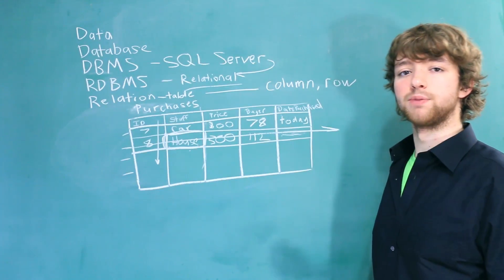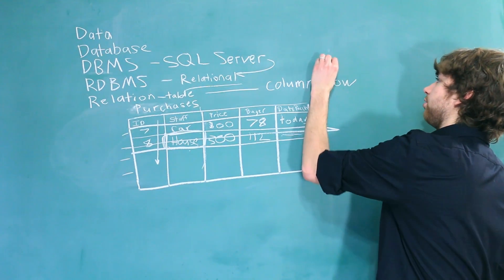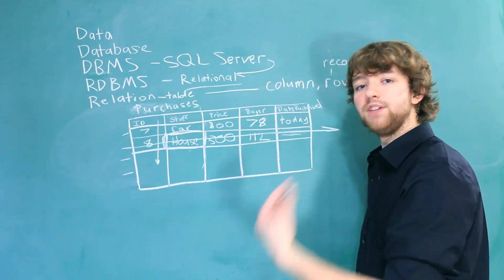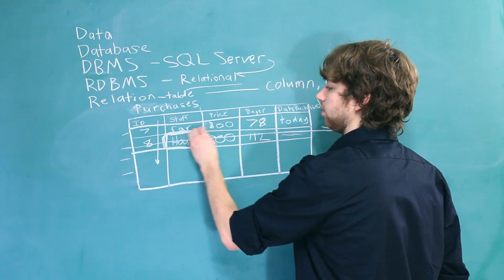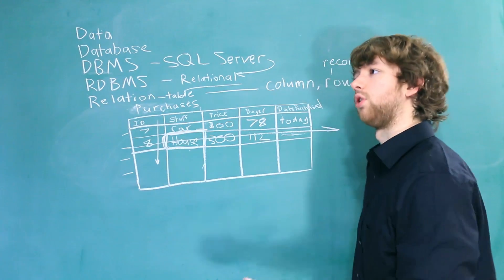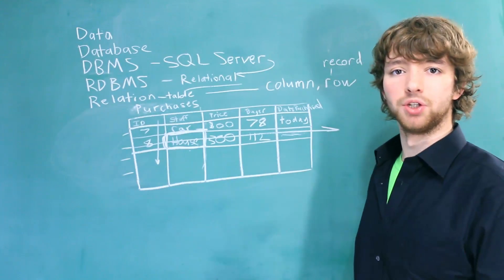There are a few other terms you will come across, including record. And record is essentially another name for a row. You'll also hear the term field, which I use to represent one value within a column. And you can also hear that called a cell.